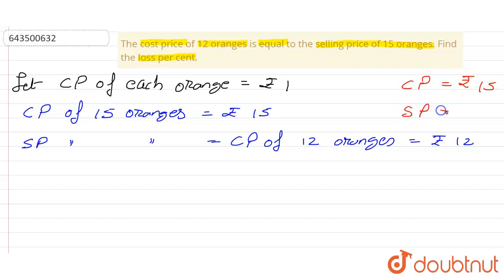And what is the SP? SP is equal to rupees 12. And we know when CP is greater than SP, then definitely it's a loss. And that's the same thing they gave us.